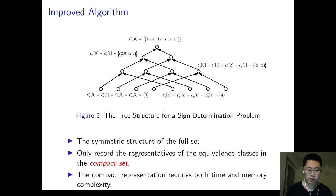It means that other vectors in an equivalence class can be obtained by simply operating transforms and permutations on the representative vector. So we don't need to record all the vectors. We just record the representatives of the equivalence classes in the compact set. The compact representation reduces both time and memory complexity.